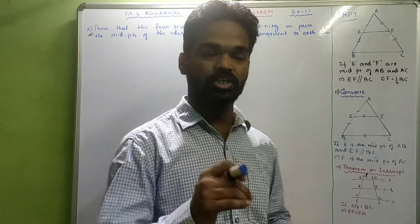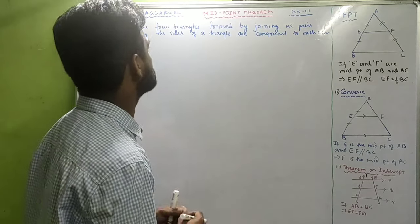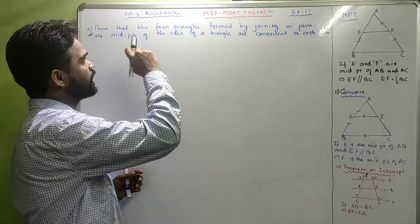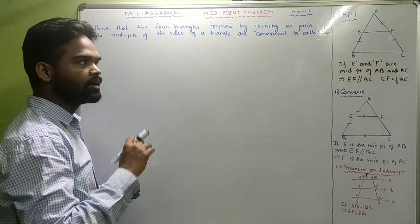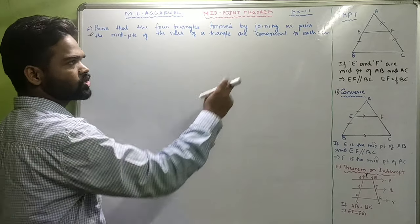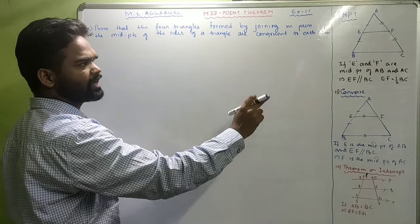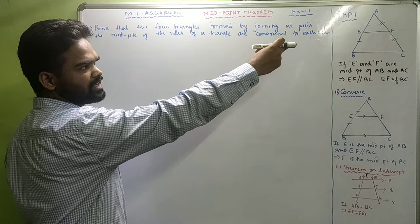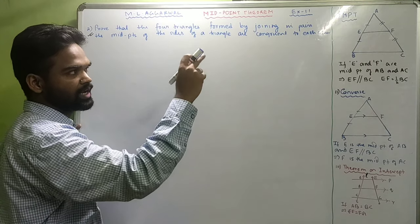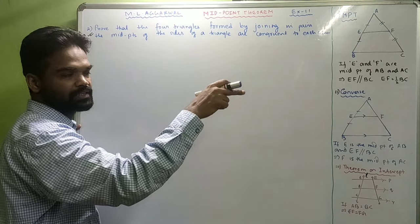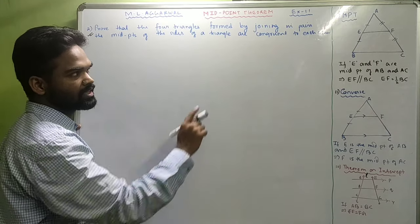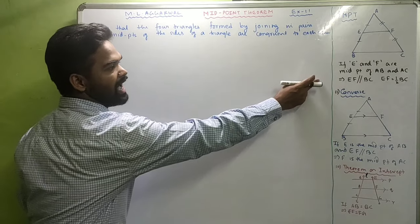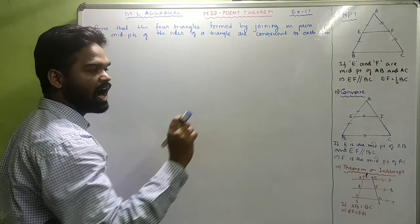Hi class. In this video we'll discuss sums from the midpoint theorem, exercise 11 and binocular 1. We have already discussed the midpoint theorem, which is just a recap. In a triangle ABC, if E and F are midpoints of two sides AB and AC, then we can say that EF is parallel to BC and EF is half of BC.